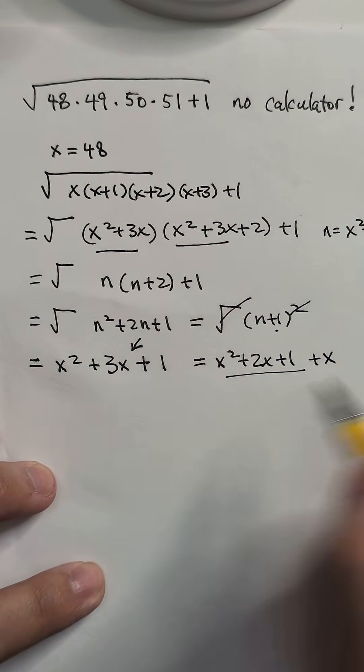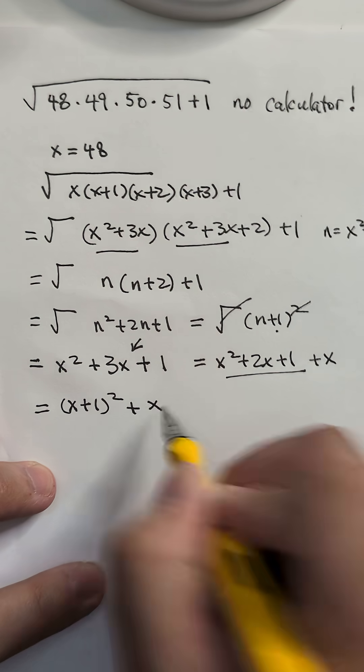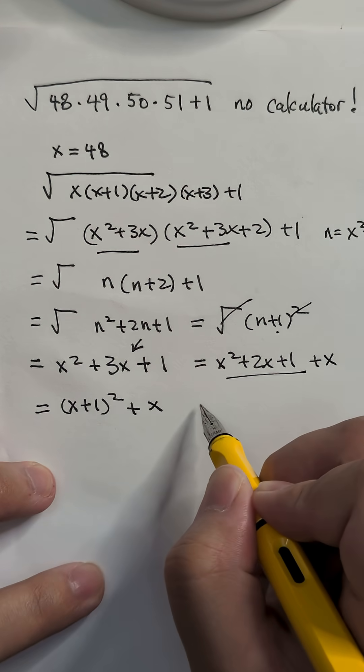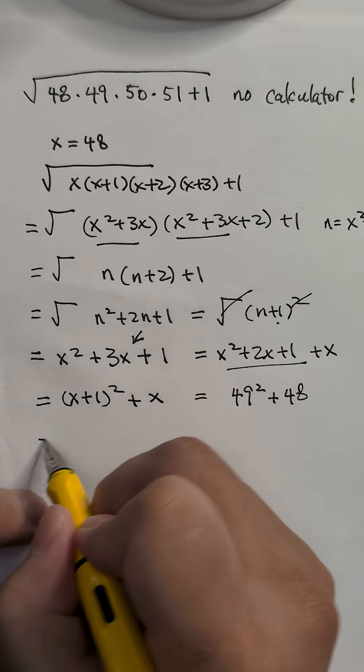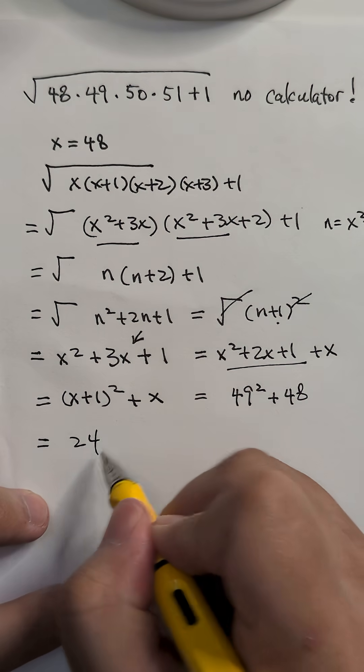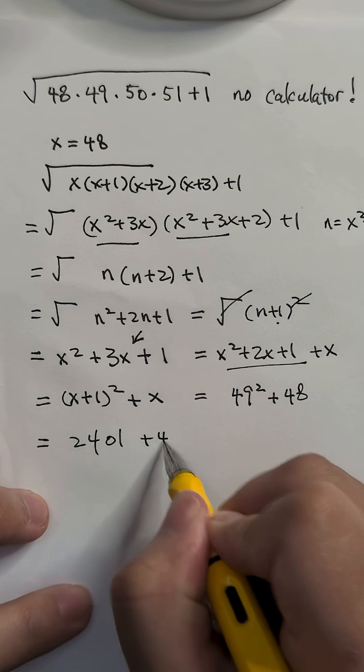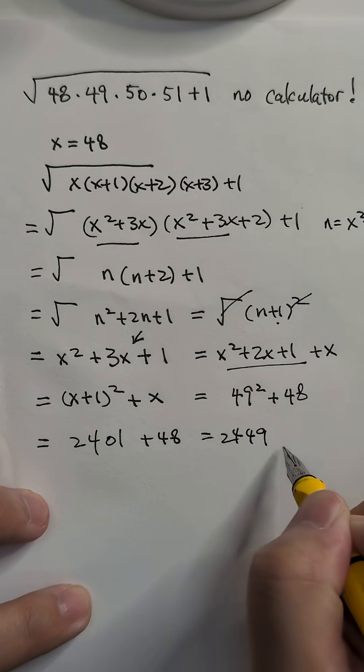And what does that look like? It would be x plus 1 squared plus x. That would make it 2,401 plus 48. And the answer checks out.